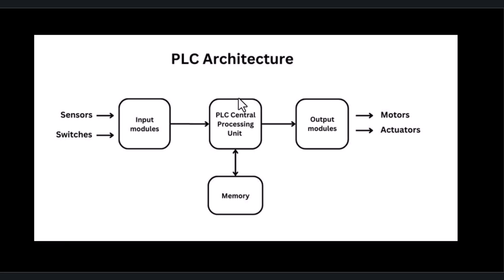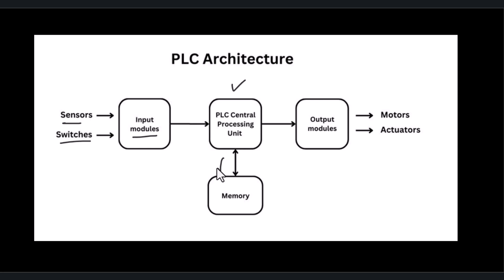This is a typical PLC architecture. The central processing unit continuously reads the data coming from the input modules, while the input modules are interfaced with various sensors and switches. After reading the data, the CPU processes it according to the PLC program stored in memory, and then it updates the output modules by sending signals to various motors and actuators through the output modules.